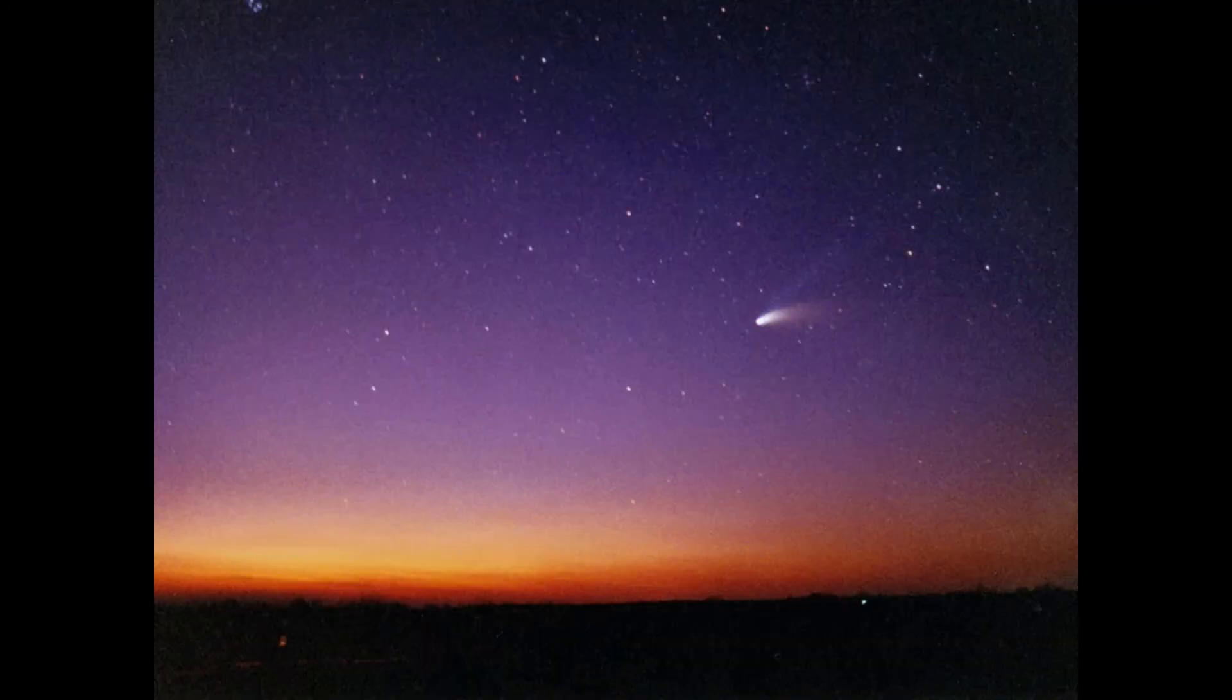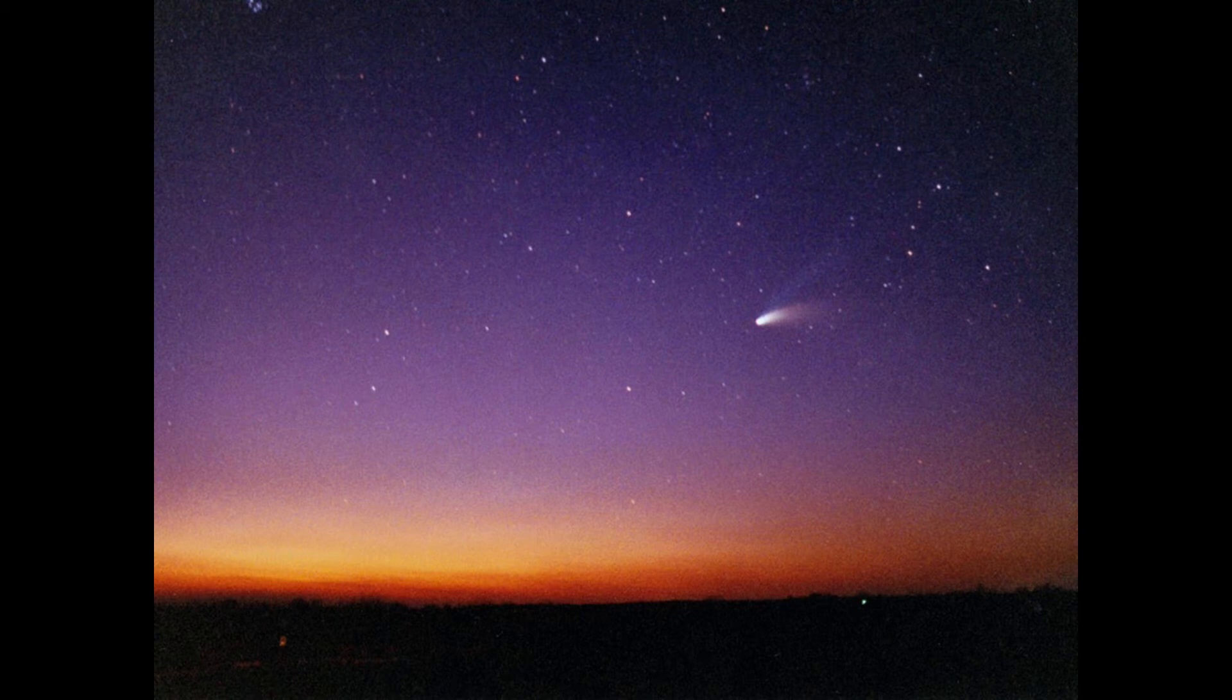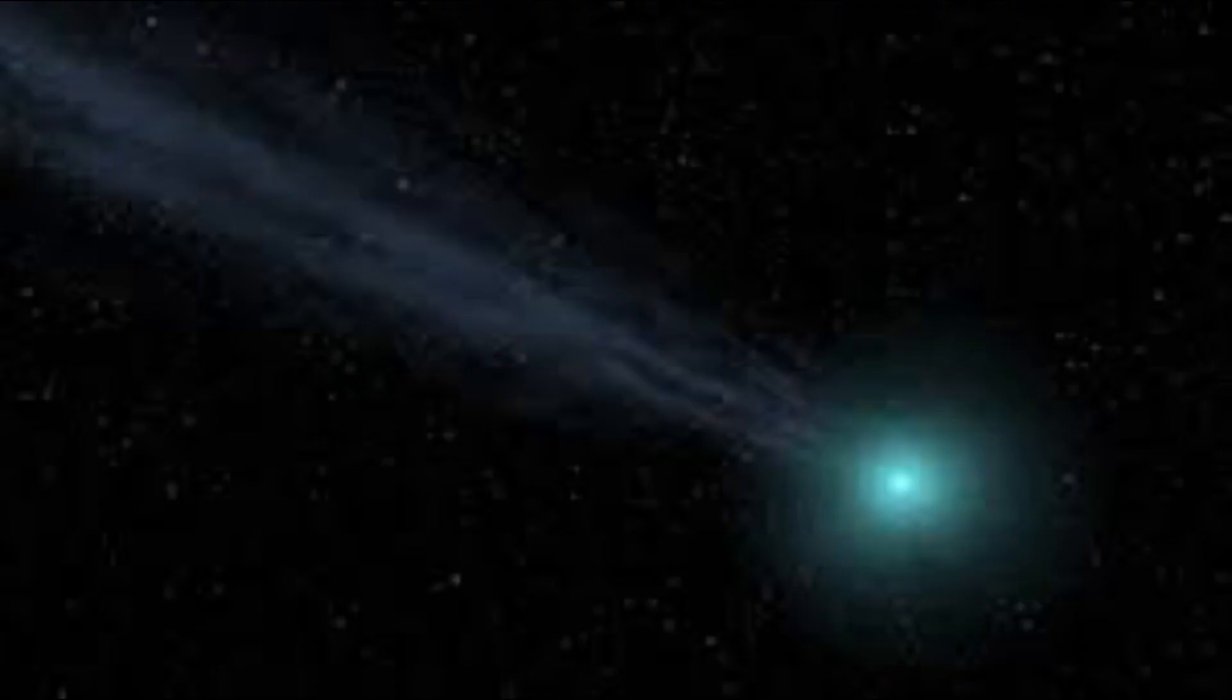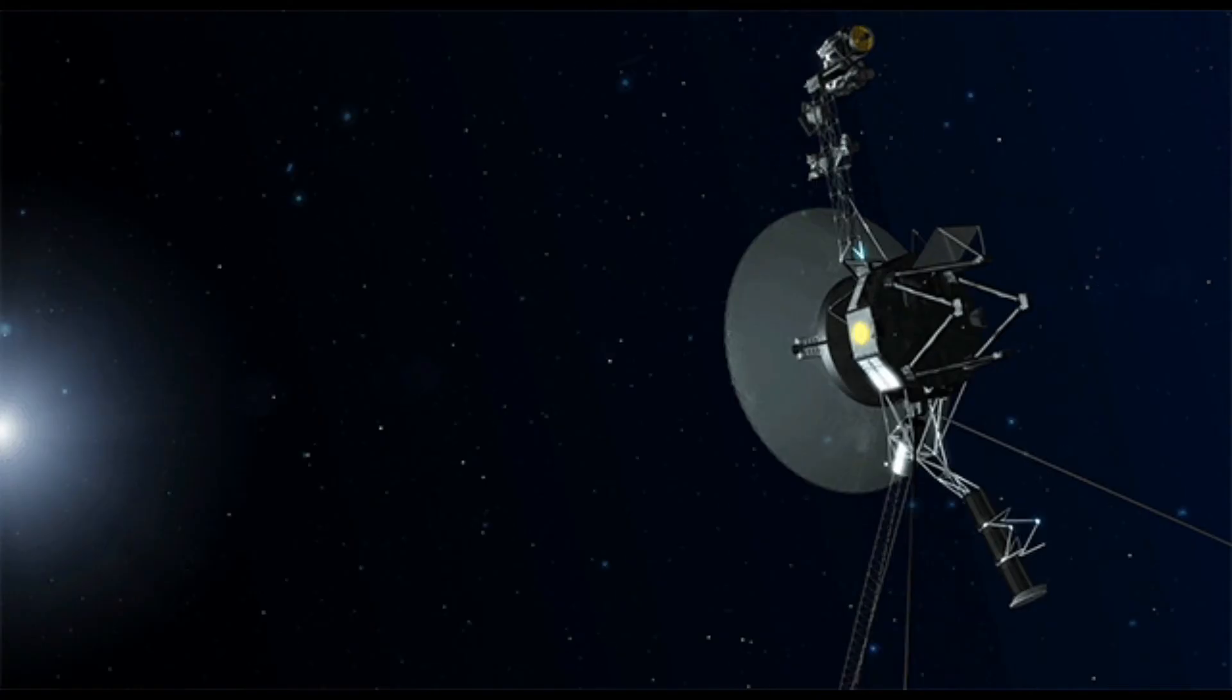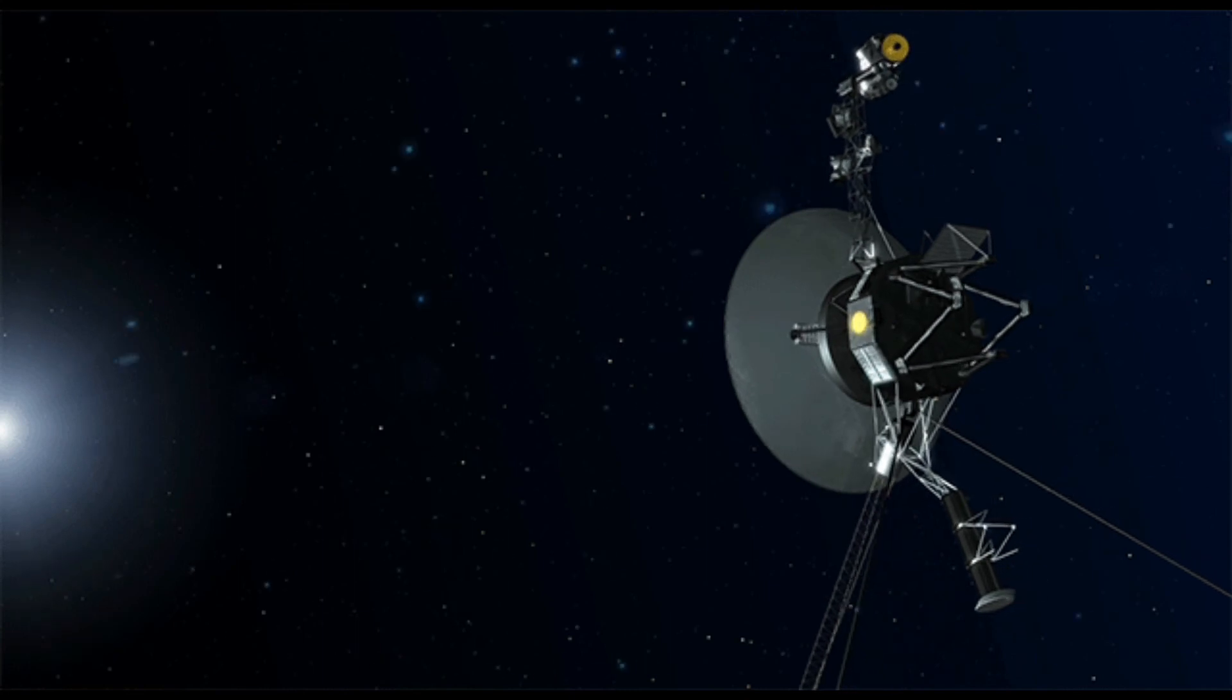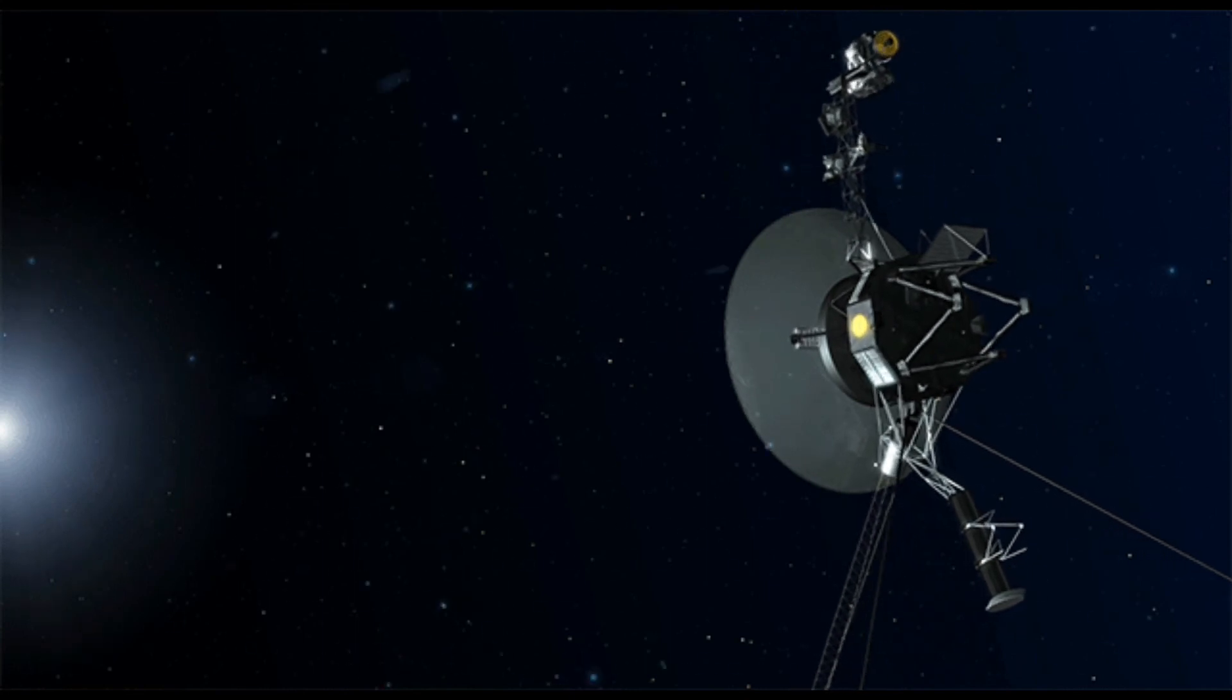We now know, for example, that the shape of it appears to be a bit comet-like after all, with a tail that's at least 350 astronomical units long, which means that's the current limit of IBEX's reach. Although the length of the tail is impossible to gauge, it could be short and stumpy.